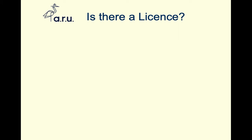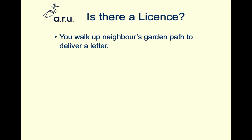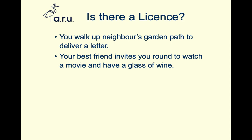Looking at a few practical examples. Walking up a neighbour's garden path to deliver a letter — that's going to be permissive at best: some sort of implicit permission by the existence of an ungated path without a sign saying 'do not enter.' So the implicit nature of that ability is a bare license — specifically an implied bare license. Your best friend invites you around to watch a movie and have a glass of wine — again, permission is given from one party to another to enter a property; there's no consideration, no exchange of money, no contract. That would be an express bare license.